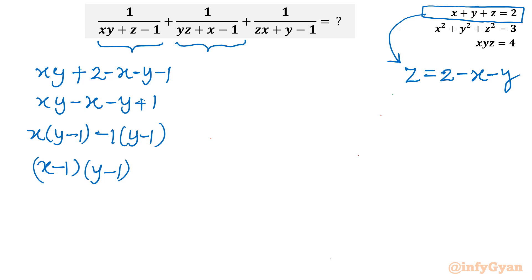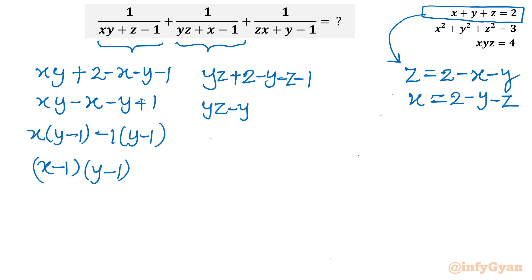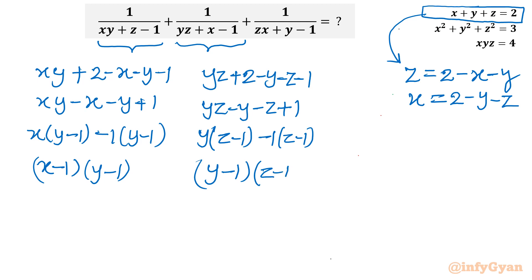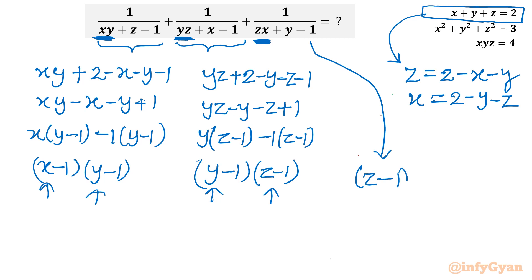Similarly for the second denominator, we substitute x equals 2 minus y minus z: yz plus (2 minus y minus z) minus 1, which gives yz minus y minus z plus 1. Taking y common yields y(z minus 1), and minus 1 common gives minus 1(z minus 1), so this factors as (y minus 1)(z minus 1). By the same pattern, the third denominator with zx becomes (z minus 1)(x minus 1).